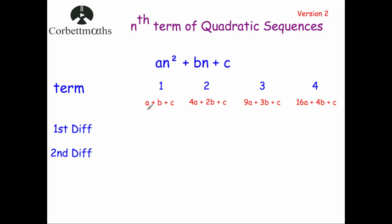So what we're going to do is work out the first differences. Like with normal arithmetic sequences, you would see what it has gone up by each time. As you can see here, if we take the first term away from the second term, you would get — well, a from 4a would leave you 3a. Then 2b take away b would be plus b, and the c's would cancel out. The next one would be 5a plus b, and the next one would be 7a plus b. And that's what we call the first differences.